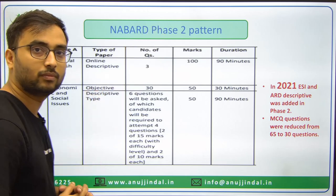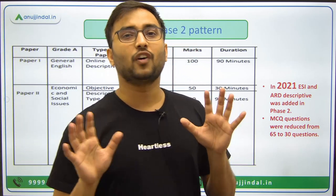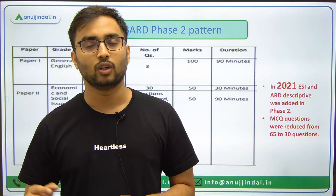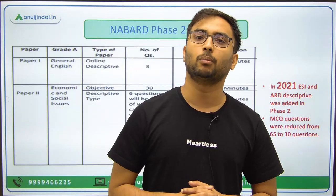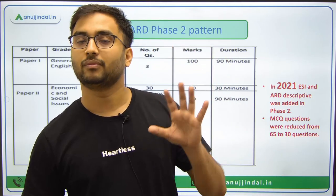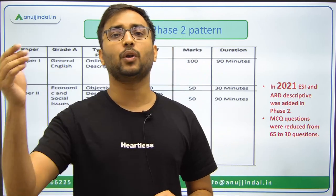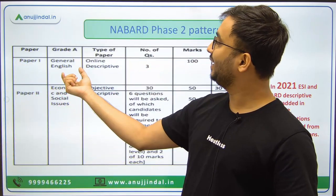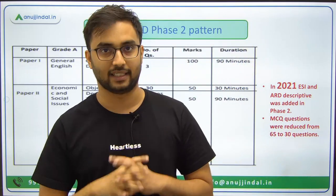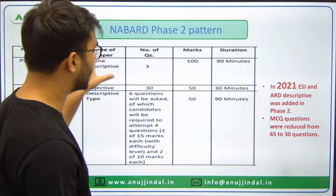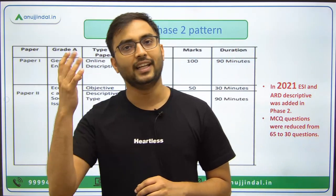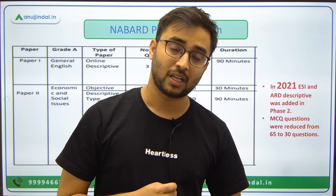First, understand that in 2018, 2019, and 2020, Phase 2 exam had two sections: Paper 1 and Paper 2. Paper 1 is about English Descriptive, also called General English, which includes answer writing. The English Descriptive part has four sections: Essay, Precis, Reading Comprehension, and Letter Writing.